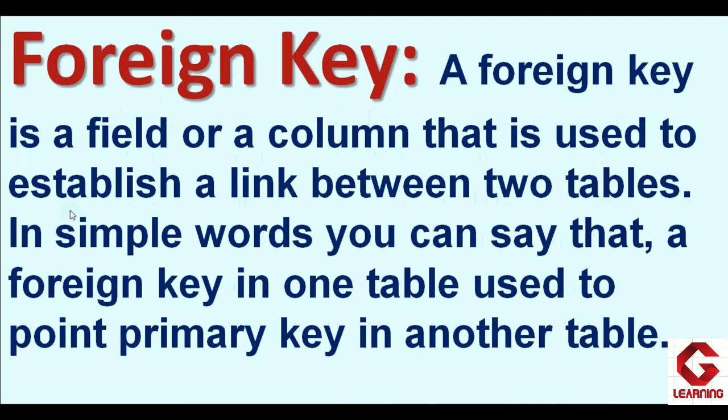Next is the foreign key. A foreign key is a field or column used to establish a link between two tables. In simple words, a foreign key in one table points to the primary key of another table. In RDBMS, data can be organized in two ways: flat file, where only one table is in the database, and relational, where two or more tables exist. When two or more tables are present, they need to be linked, and the next slide shows an example of this.